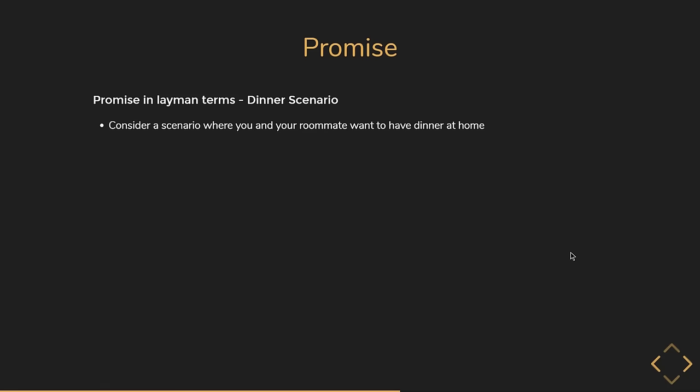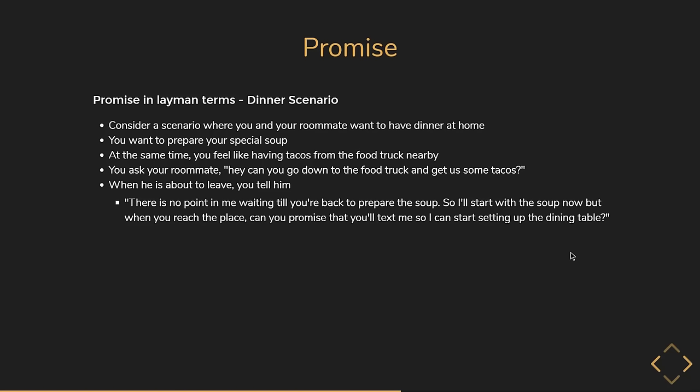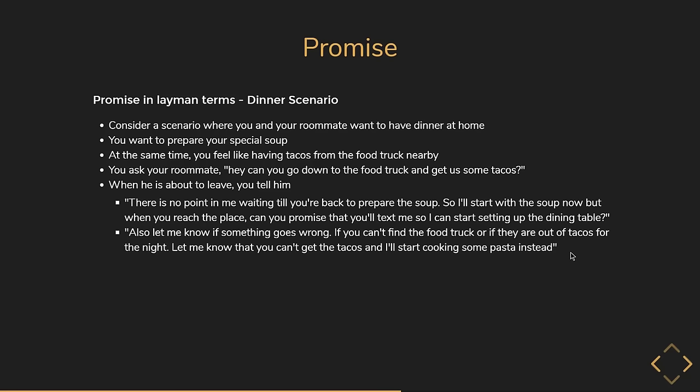Consider a scenario where you and your roommate want to have dinner. You want to prepare soup and also get tacos from a food truck. You ask your roommate to go get tacos. You tell him: there's no point waiting till you're back to prepare the soup, so I'll start now. But when you reach the place, can you promise to text me so I can start setting up the dining table? Also let me know if something goes wrong — if you can't find the food truck or they're out of tacos, let me know and I'll start cooking pasta instead.